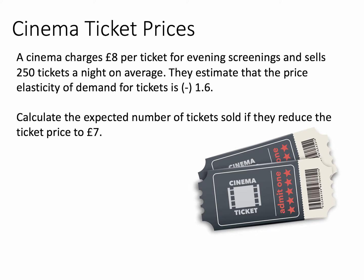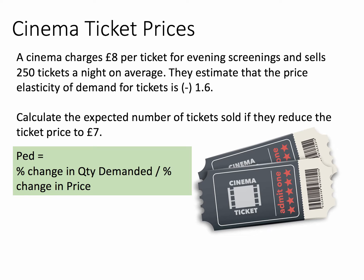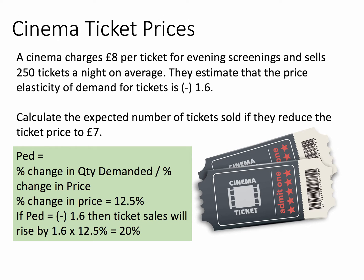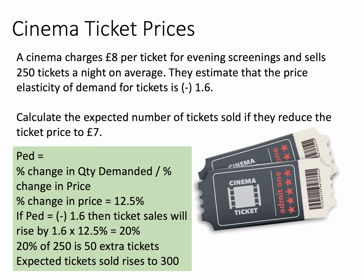What happens to the expected number of tickets if they cut the price by £1 from £8 to £7? A reminder that price elasticity of demand is the percentage change in quantity demanded divided by the percentage change in price. A change in price from £8 to £7 is a £1 change over an original price of £8, so it's a 12.5% reduction in price. The elasticity is 1.6, multiplied by the price change of 12.5%, which gives a 20% increase in ticket sales. They were selling 250 tickets, so 20% of 250 is 50 extra tickets — the answer is they will be expected to sell 300 tickets on average by cutting the price.